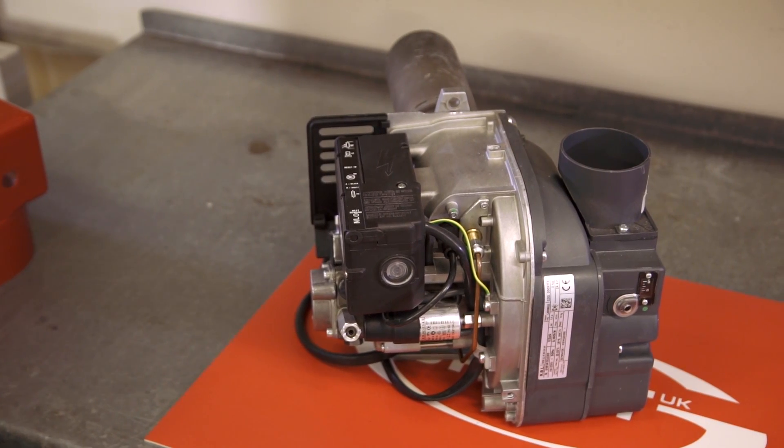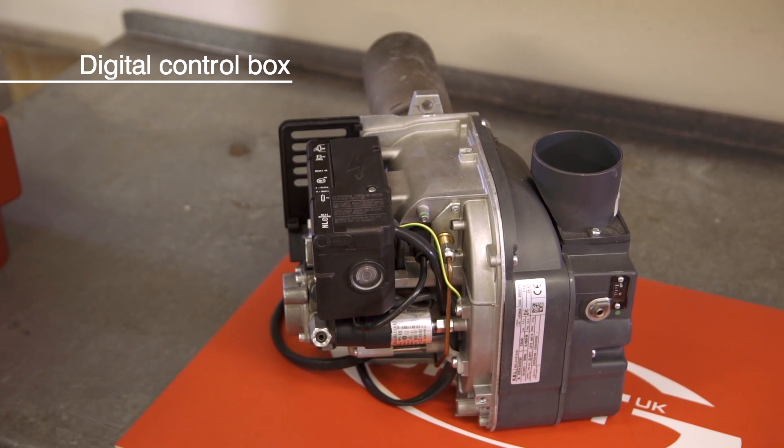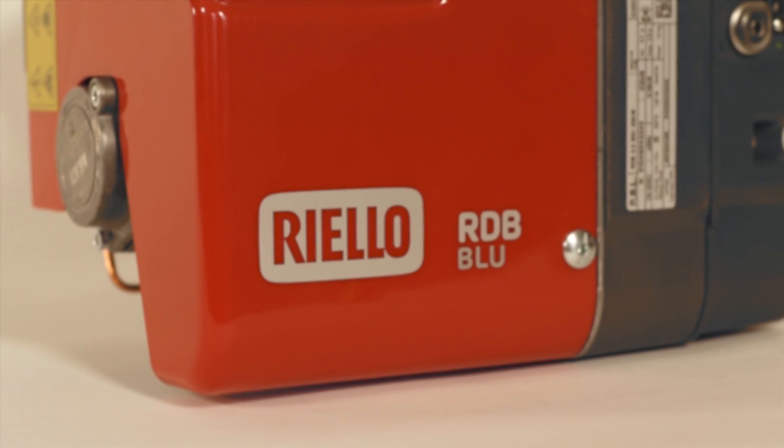This UV cell requires a digital control box, instead of the 535SE analog box, more commonly found on RDB burners.